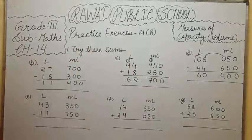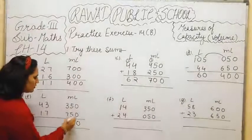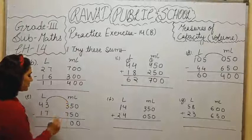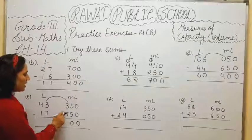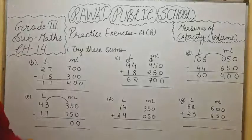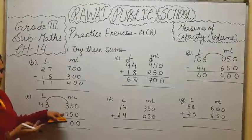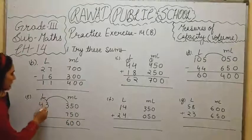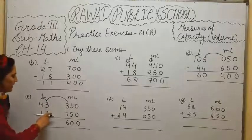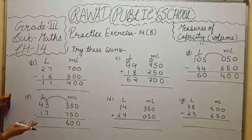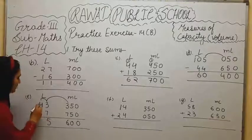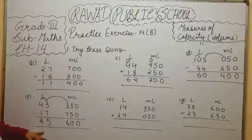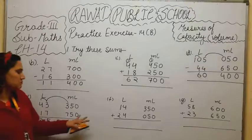Question number E is subtraction. 0 minus 0, 0. 5 minus 5, 0. We can't subtract 7 out of 3, so we will give carry to this number. 13 minus 7. How much is left? We can calculate on our fingers as well. 7, 8, 9, 10, 11, 12, 13. 6 is left. Then, here we can carry 12 minus 7. After 7, 8, 9, 10, 11, 12, 5 is left here. And 3 minus 1, 2 will be left. 3 minus 1, 2. So, 25 liter and 600 ml.